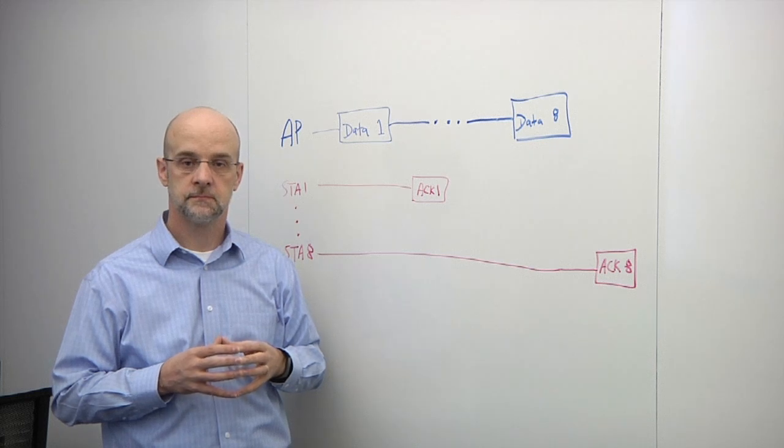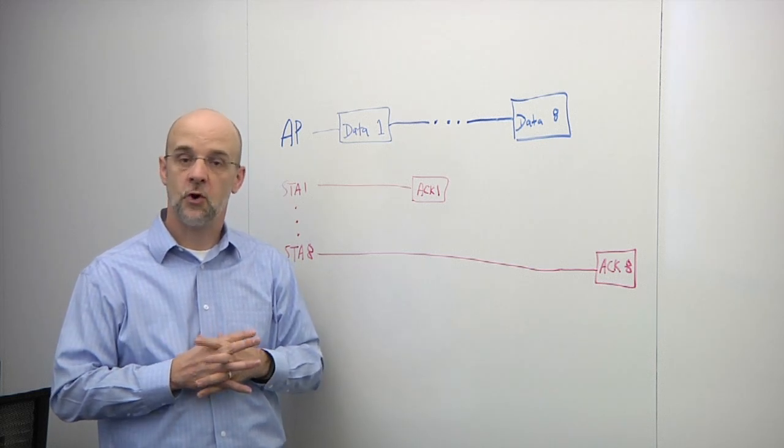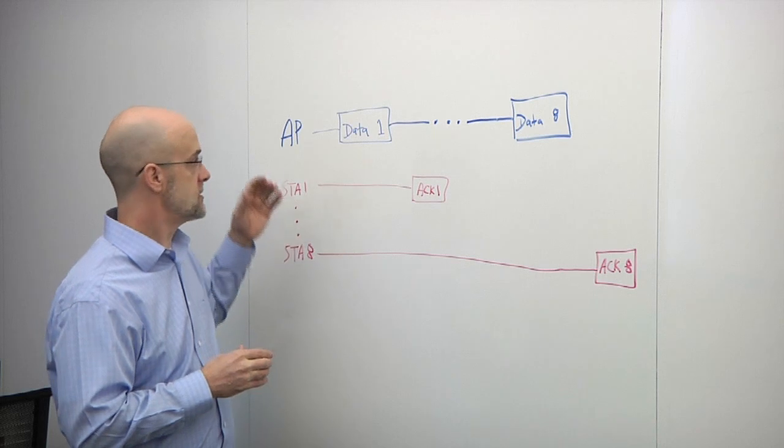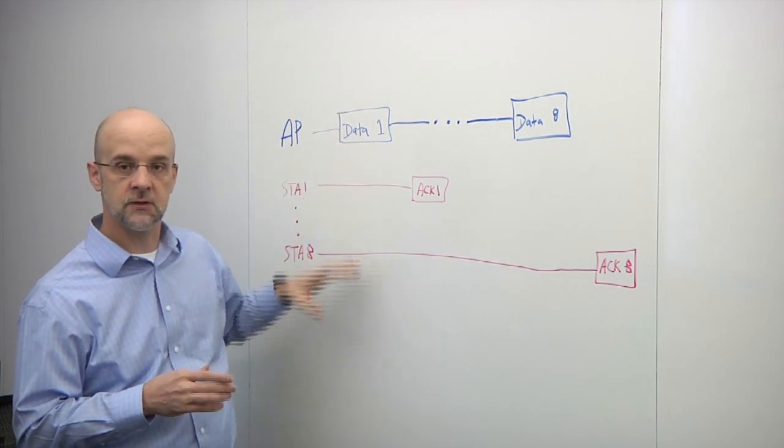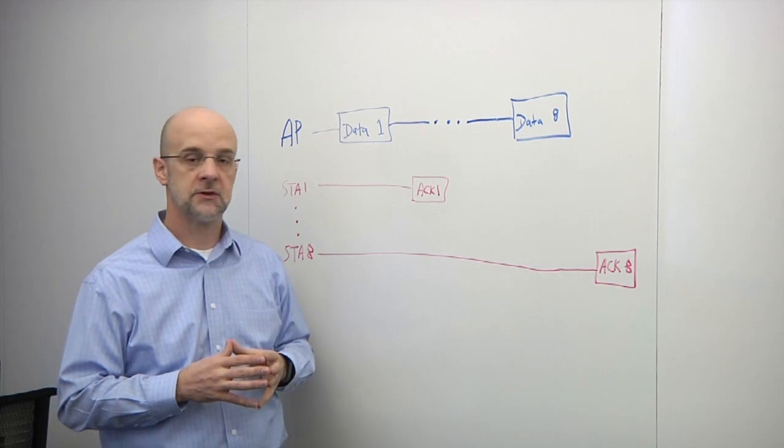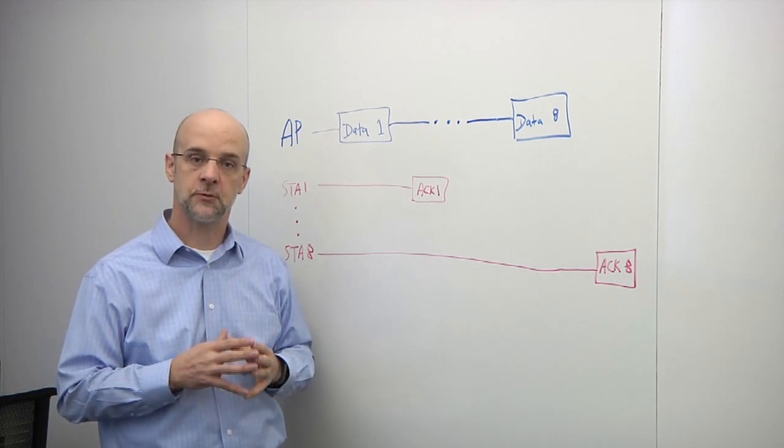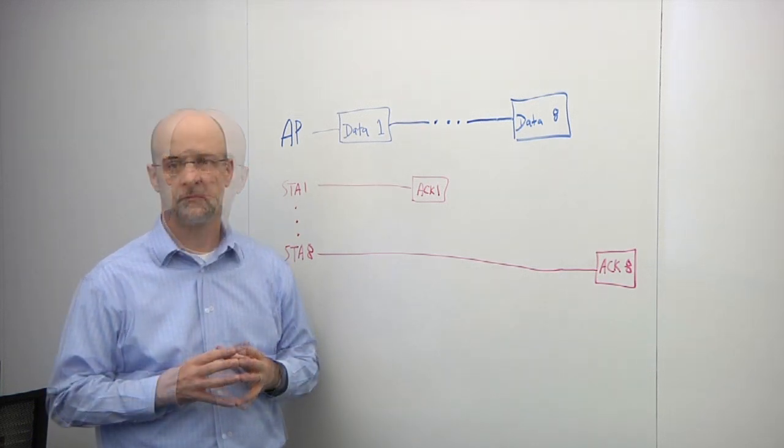And this sounds incredibly inefficient. How do we improve this? With OFDMA, we can start to put these channels, these data packets together in a single frequency, and be able to do a single transmission and then receive multiple ACKs back from the clients.